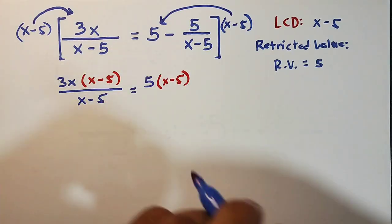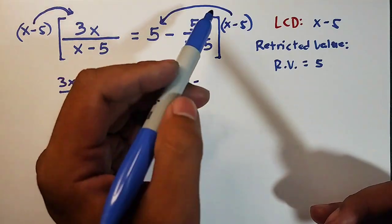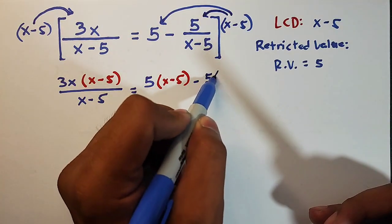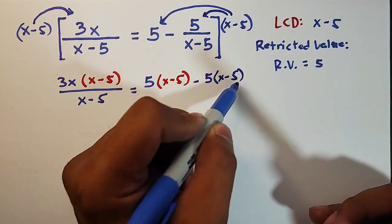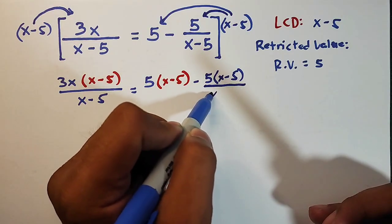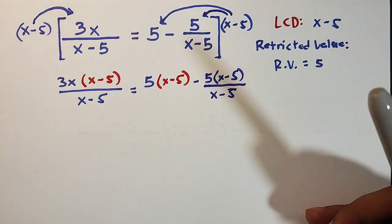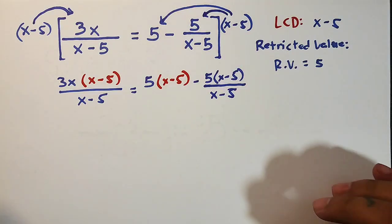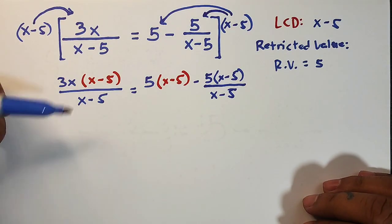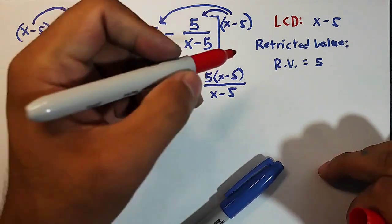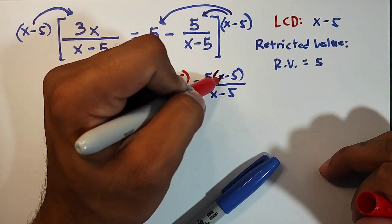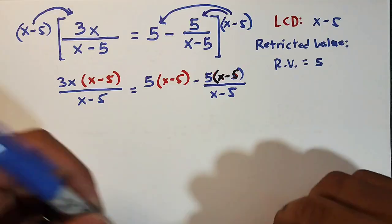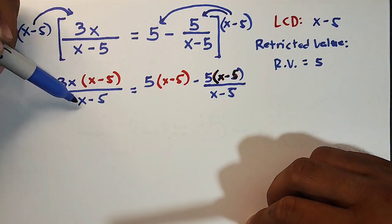And here we have minus, multiply it here, minus 5 times x minus 5 over x minus 5. Okay, so as you can see in our numerator we have x minus 5, x minus 5, oh sorry, I should have used red ink so you can see it better. Okay, so here as you can see, we can easily eliminate your denominator.